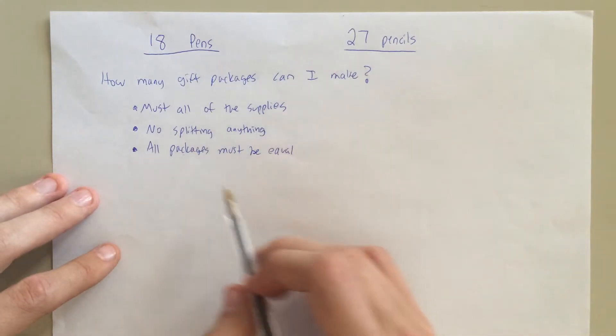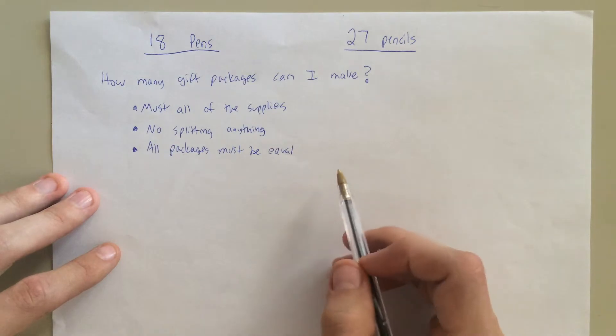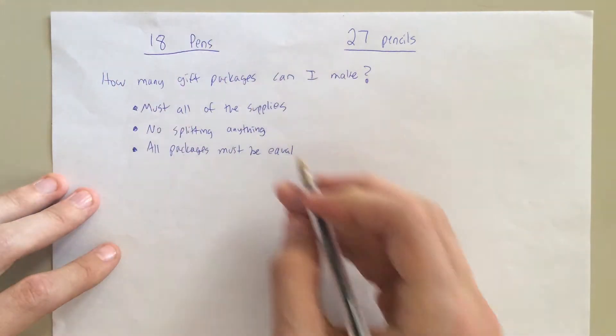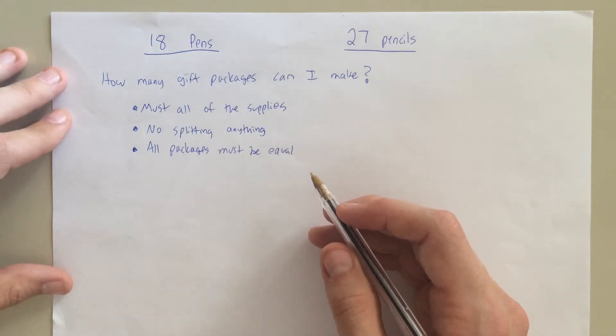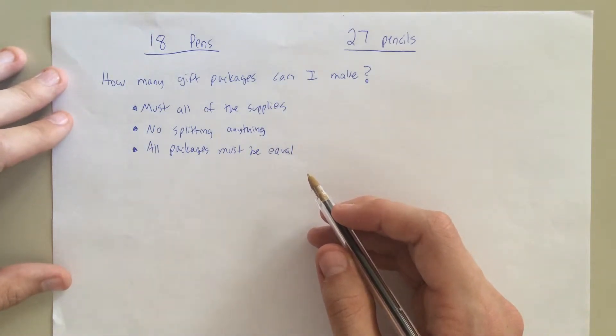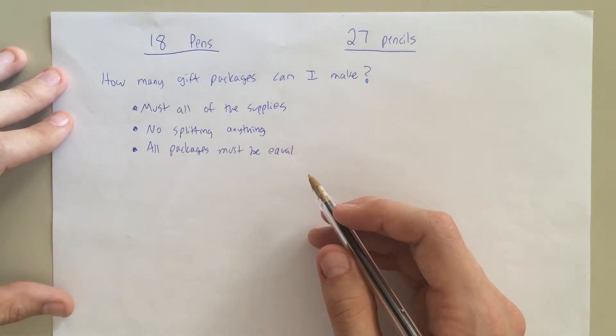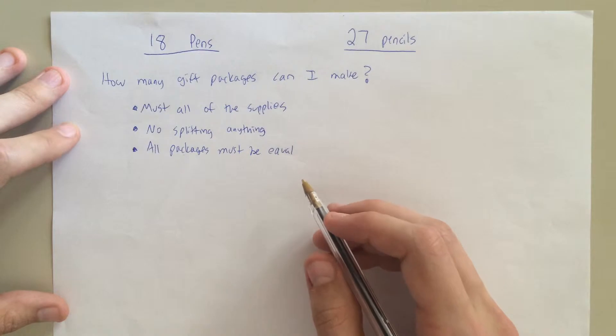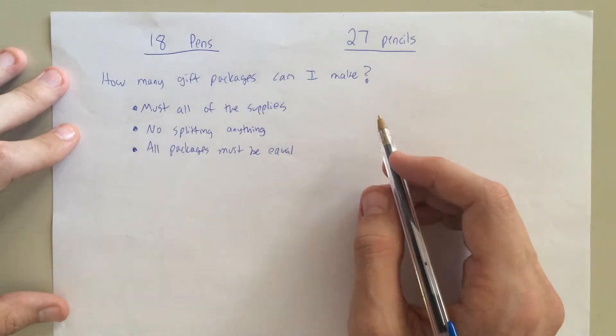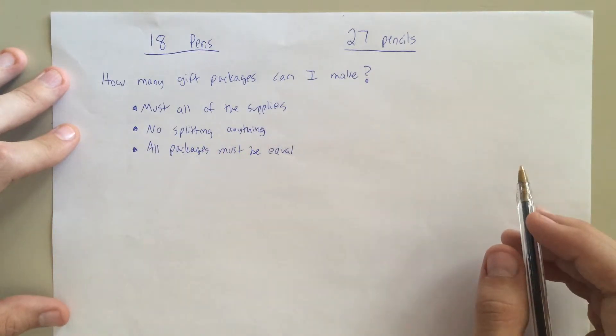Now, this, I hope you're starting to see is very similar to what we did in the last video, which was finding the greatest common factor between two numbers. And if you're still having trouble with that, I would suggest trying to find that video. But if not, we can move on. So, what we're doing is essentially we are trying to find the greatest common factor between these two numbers.